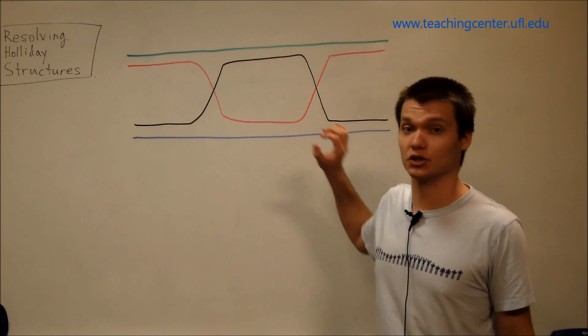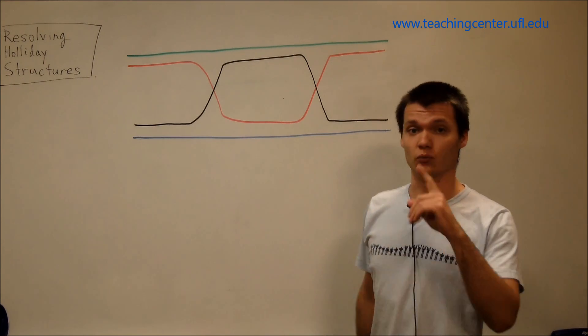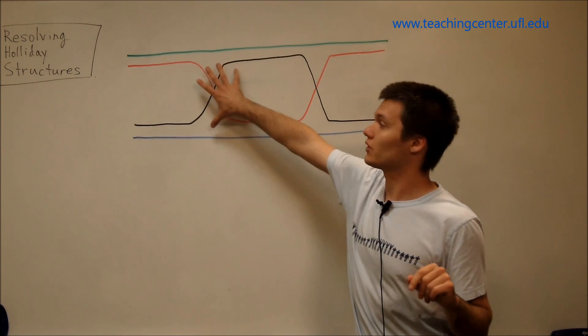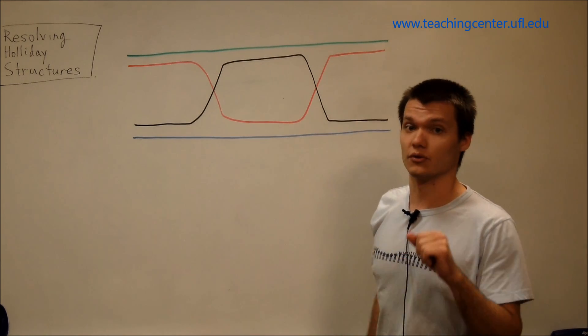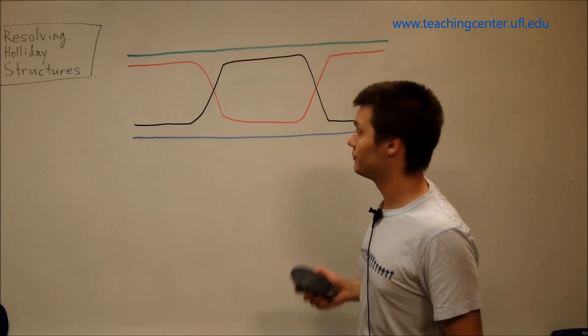So here we have actually a double Holliday structure, so what I'm going to do is I'm going to make one type of cut for one of these junctions and make the other type of cut for the other type of junction. And let's get to it.